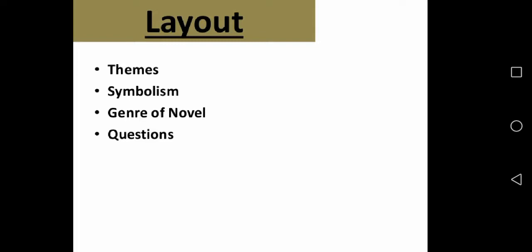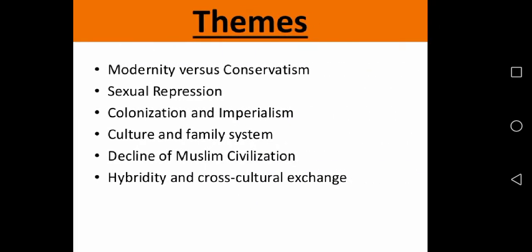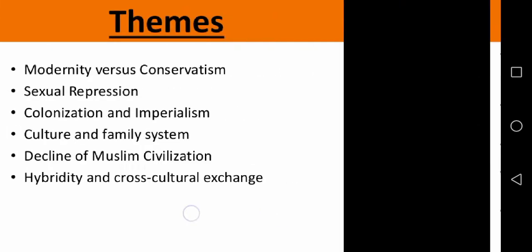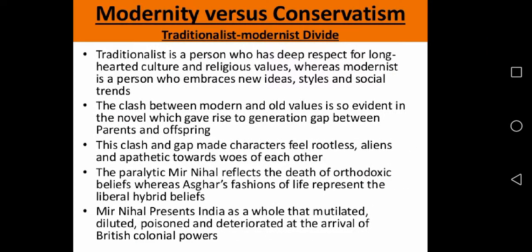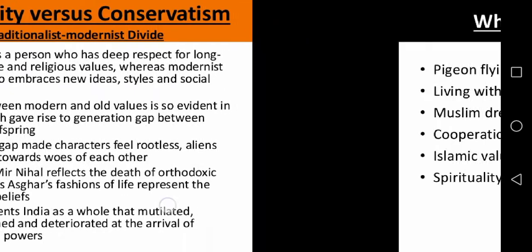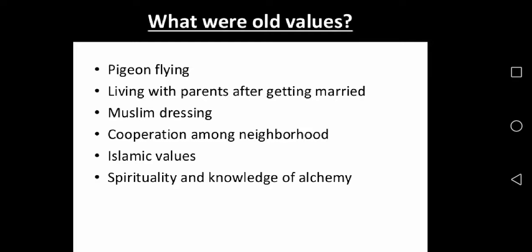Ahmed Ali has vividly drawn the picture of old Delhi and its Muslim inhabitants of that era. He depicts the themes of disintegration, degeneration, alienation, gender and social conflicts. The novel is filled with nostalgia around the fall of Mughal emperors and the effects of colonialism and imperialism on Indian Muslims in Delhi.